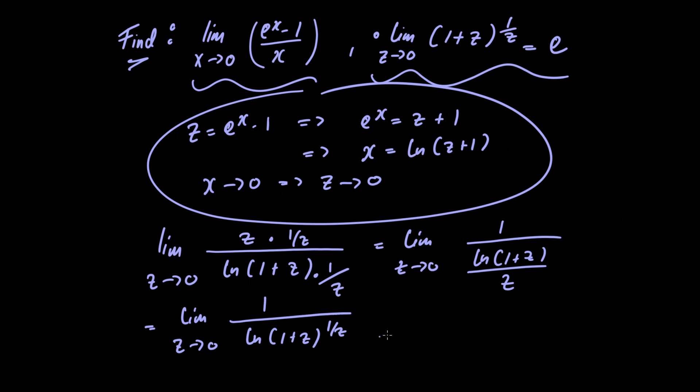We can move the limit inside the natural logarithm. This equals 1/ln[lim_{z→0} (1 + z)^(1/z)]. We know from the earlier limit that this equals e. So we have 1/ln(e), which equals 1. So our final answer is 1.